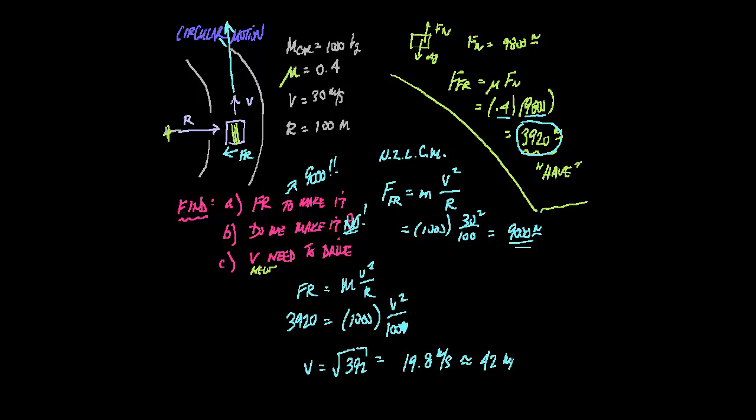That's, I don't know, 42 miles an hour. So instead of entering at 66 miles an hour, originally, we really have to slow down to 42 to be able to just make that corner based on the friction.